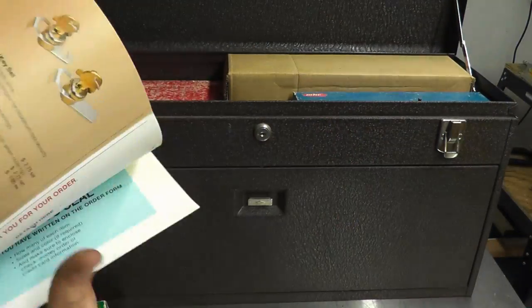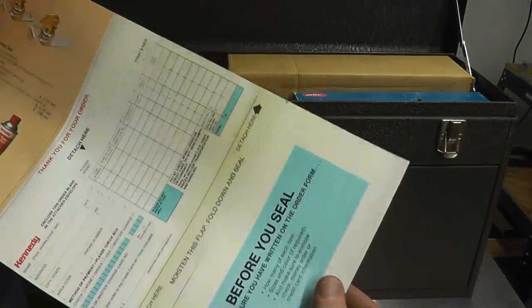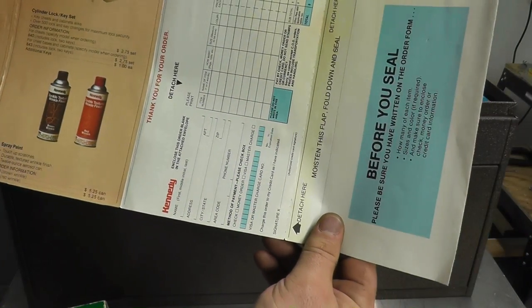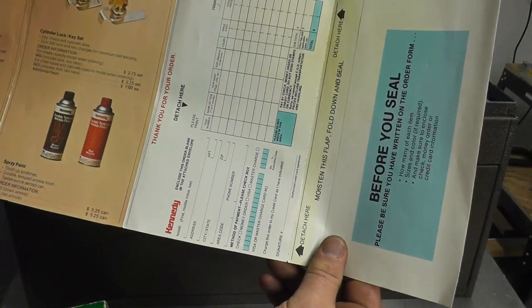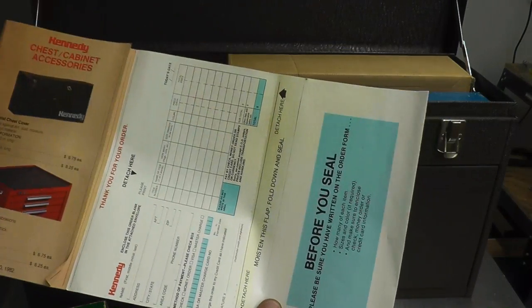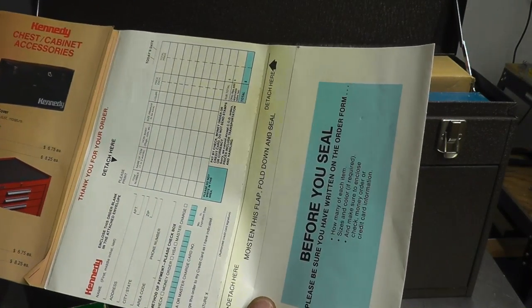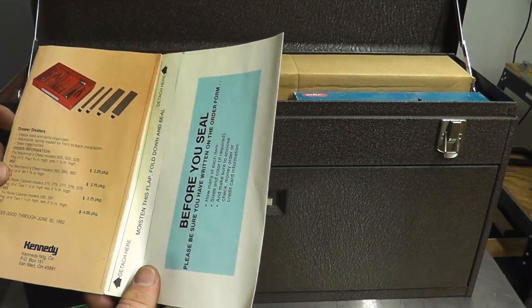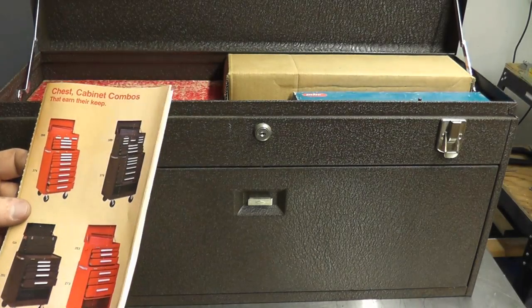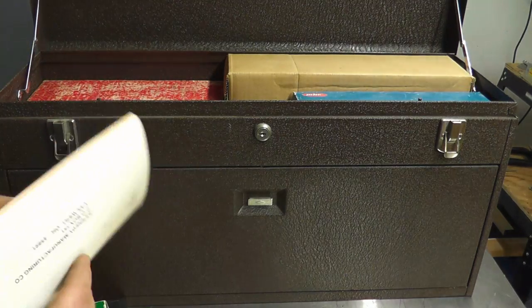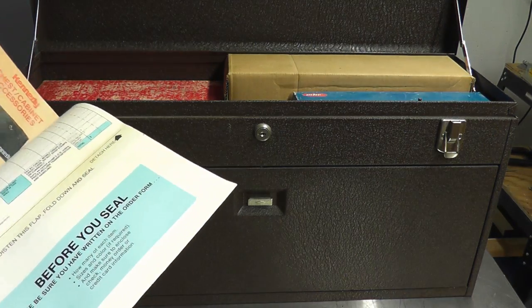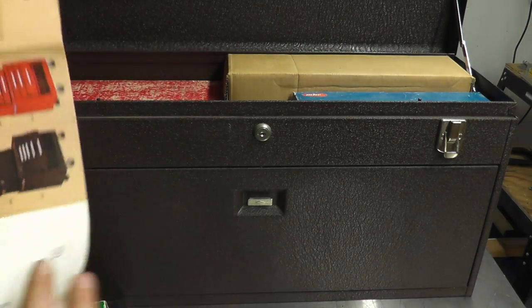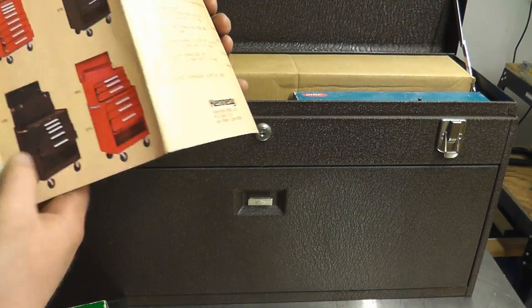See how much these things cost. Five twenty-five a can for some touch-up paint. Drawer liner, six fifty a roll. Machinist chest cover for six seventy-five or eight twenty-five. Doesn't have the prices for the actual chests.